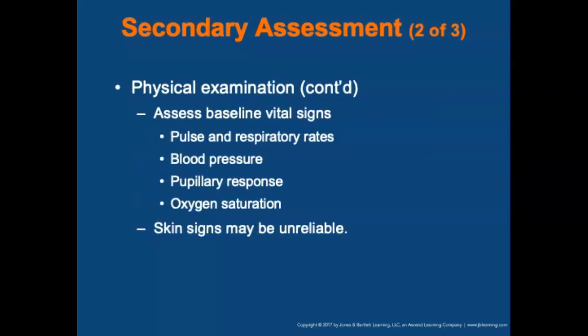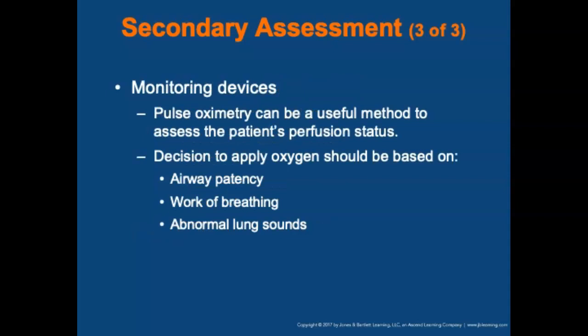Vital signs indicate whether the body is compensating for the stress of the reaction. Assess baseline vitals including pulse and respiratory status, blood pressure, pupillary response, and oxygen saturation. Skin signs may be unreliable indicators of hypoperfusion as they may vary widely or be hidden by rashes and swelling. Pulse oximetry can be a useful method for assessing perfusion status, but the decision to apply oxygen should be based on airway patency, work of breathing, and abnormal lung sounds on auscultation — not solely on pulse ox readings.